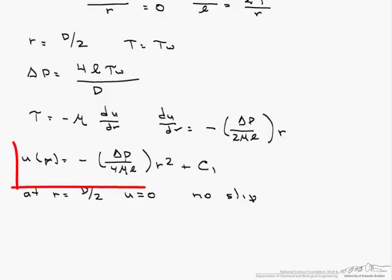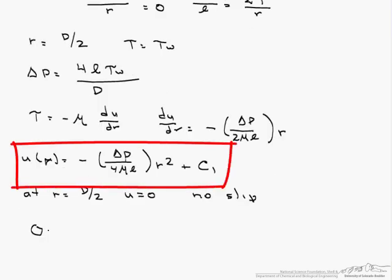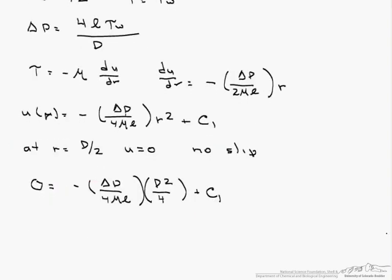So let's put those boundary conditions in. u equals 0 equals minus delta P over 4 times mu times l, and now our r squared is d squared over 4 plus c1. And this then allows us to solve for c1 as delta P d squared over 16 times mu times l.